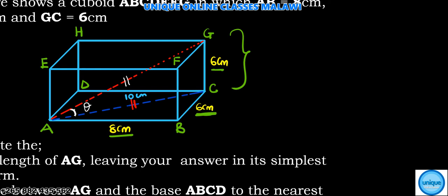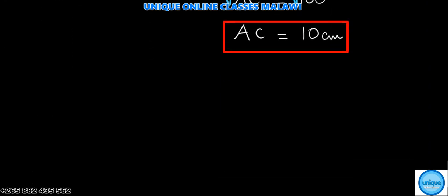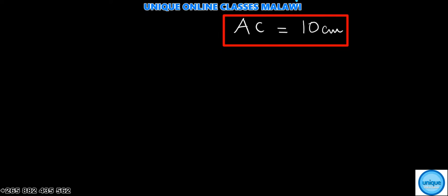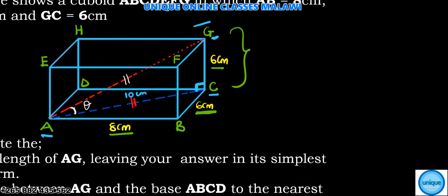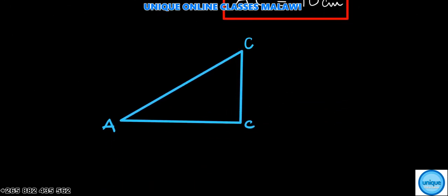Now looking at triangle ACG, where this angle is 90 degrees, we can also draw another right angle triangle ACG. Let me draw that one. We have AC and G here.